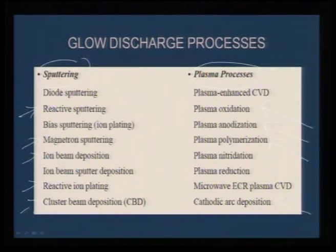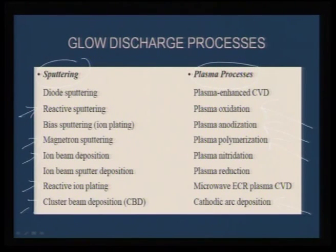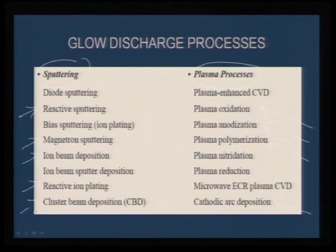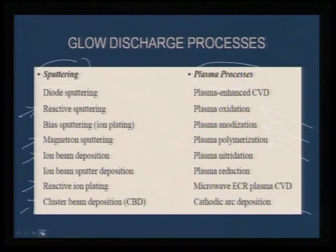Based on the sputtering principle, several techniques have been developed: reactive sputtering, magnetron sputtering, ion beam sputtering, reactive ion plating, and cluster beam deposition. If the material only interacts with the plasma, then plasma oxidation, anodization, polymerization, nitridation, and cathodic arc deposition are all possible. We will look at some examples and highlight the differences between these techniques.